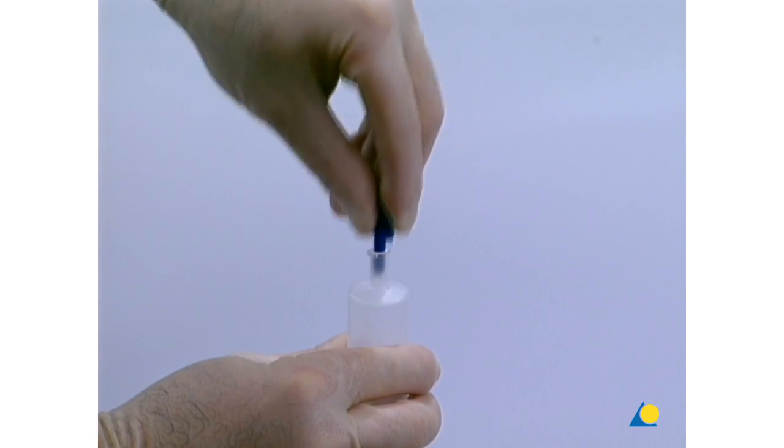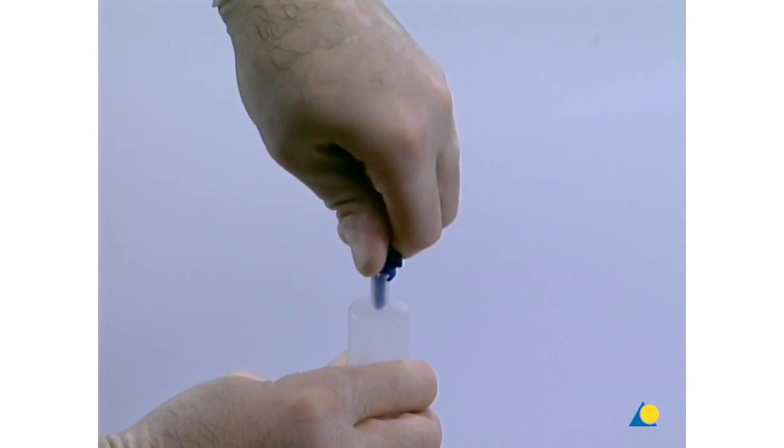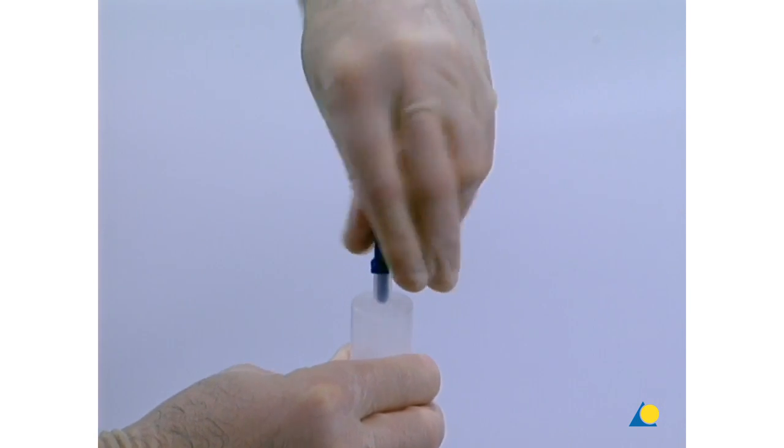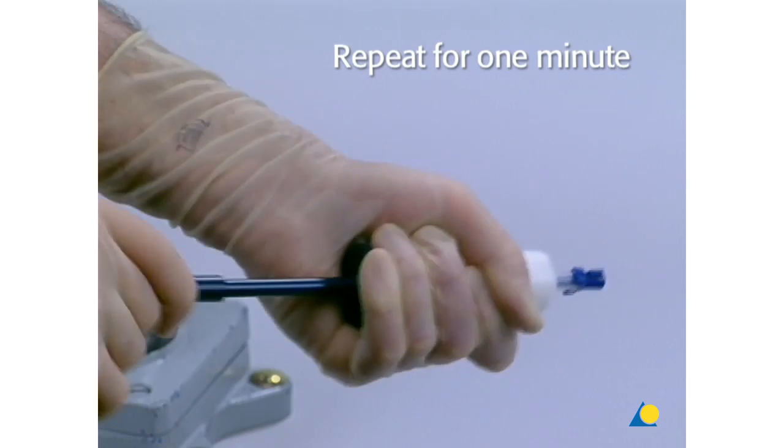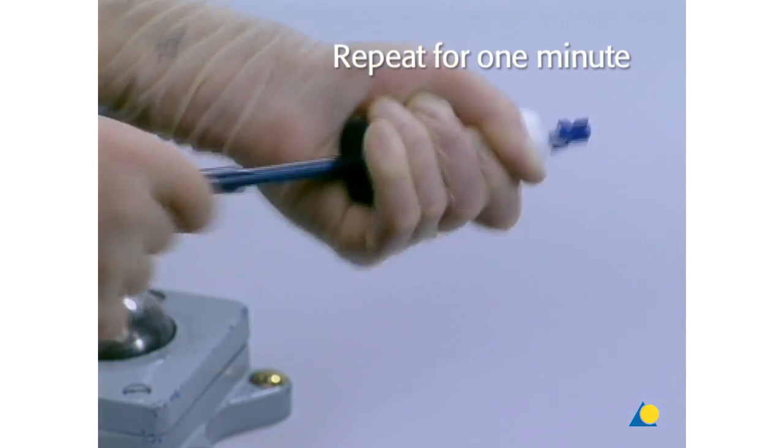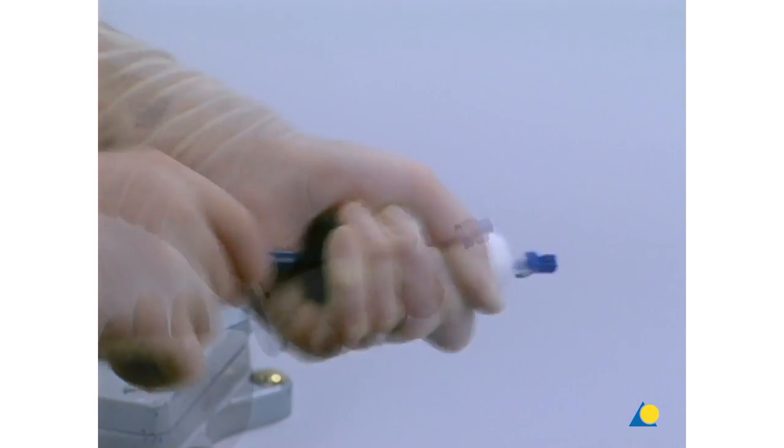The blue sealing cap is replaced and locked by its bayonet catch. The Kronos inject is mixed by moving the blue plunger back and forth from stop to stop for a full minute. The plunger is rotated at the same time.